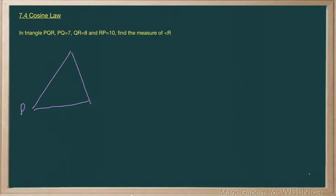Label it PQR, and we have PQ equal to 7. PQ is this one, right? It's the side that's labeled, or in between P and Q.